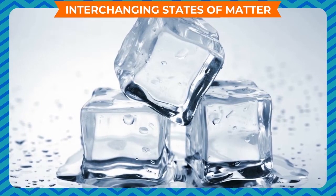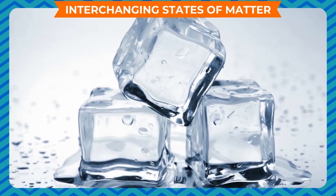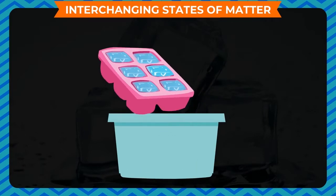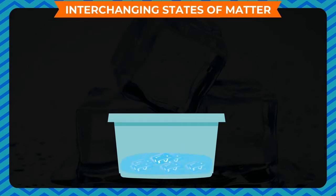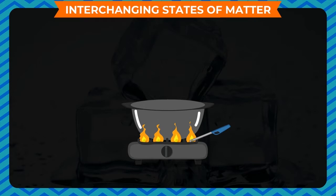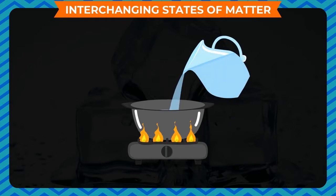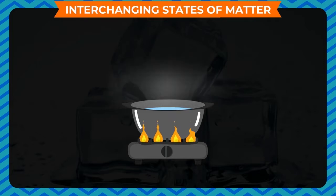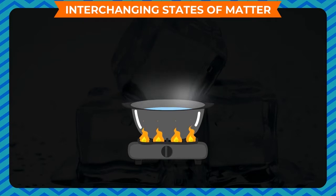Matter can change its state. Take out a few ice cubes (solid) from your fridge and put them in a pot. Leave the ice cubes for a few minutes — they convert into water (liquid). Now boil this water; after a few minutes, the water converts into steam (gas). Thus, a solid can be converted into a liquid and a liquid into a gas.